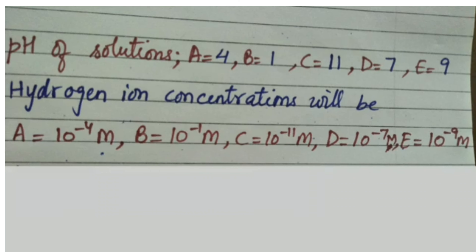Solution B has pH 1, so hydrogen ion concentration of solution B is 10 to the power minus 1 mole per liter. Solution C has pH 11, so molar concentration of hydrogen ion for C is 10 to the power minus 11 mole per liter. Solution D has pH 7, so molar concentration of hydrogen ions of solution D is 10 to the power minus 7 mole per liter.